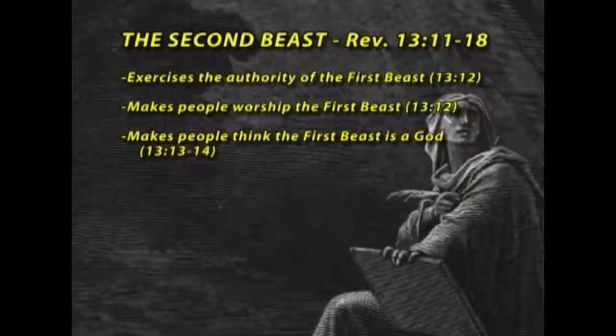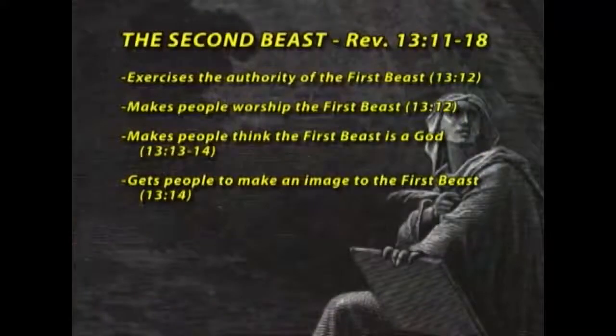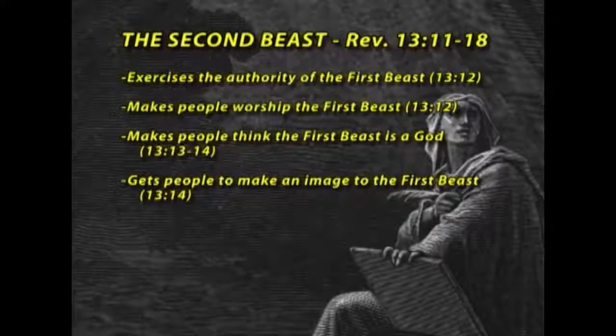In Revelation 13, verses 13 and 14, he makes people think that this first beast is a god — by signs and trickery, by miracles that weren't real, he makes people think the first beast is a god. People looked up to Roman emperors as gods, and it was this beast's job to make sure people thought they were gods. Revelation 13, verse 14 says he even gets people to make an image to the first beast. As archaeology has revealed, people made busts and images of the emperors, placed on pedestals, and worshipped regularly.